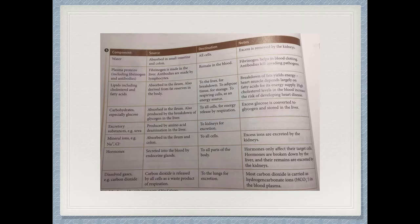Here is a table of the main components transported in the blood. This falls under the factor of transportation in blood — all the different substances useful for the body and waste products transferred in the blood. These include water, plasma proteins including fibrinogen, lipids, fatty acids absorbed in the ileum of the small intestines, and carbohydrates absorbed in the alimentary canal. Excretory products including urea are made in the liver and in cells and are then carried to the kidneys by the blood.